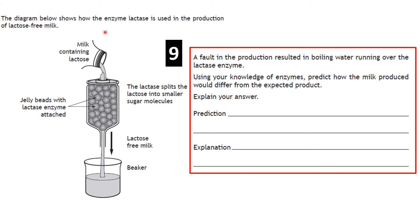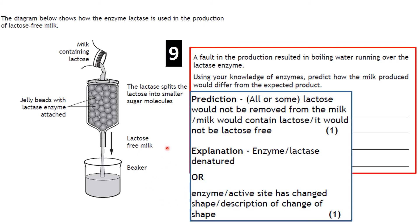Question on enzyme lactase: boiling water ran over the lactase enzyme — predict how the milk produced would differ. Boiling water denatures the enzyme, changing the shape of the active site. As a result, lactase would not work at its optimum and would not break down all the lactose, so the milk would still contain lactose — it would not be lactose-free.